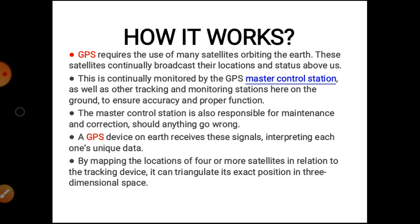Next: how does GPS work? GPS requires many satellites orbiting the earth. These satellites continuously broadcast their location and status, and are continuously monitored by the GPS master control station as well as other tracking and monitoring stations on the ground to ensure accuracy and proper functioning. The master control station is also responsible for maintenance and correction. A GPS device on earth receives these signals, interpreting each one's unique data. By mapping the location of four or more satellites in relation to the tracking device, it can triangulate its exact position in three-dimensional space.